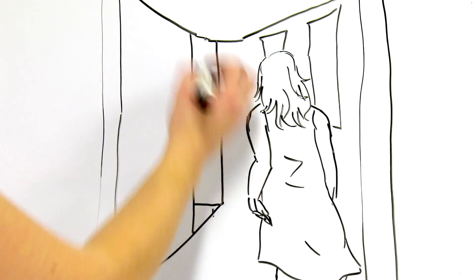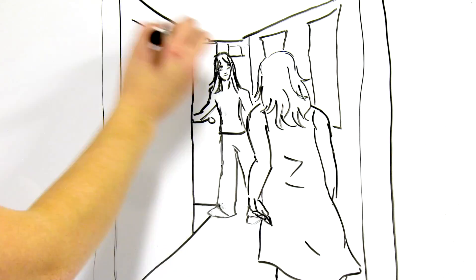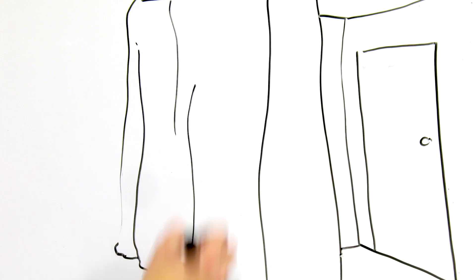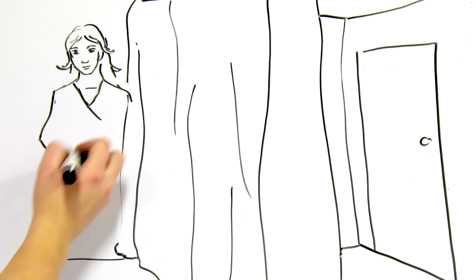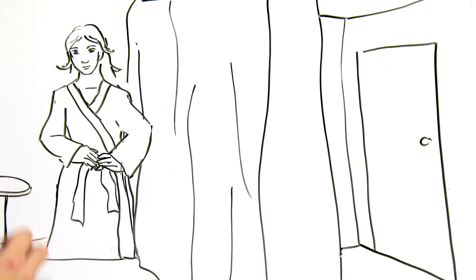Follow the technician to the thermal imaging suite. Once you're there, go behind the privacy screen. Put on the robe provided by the center.